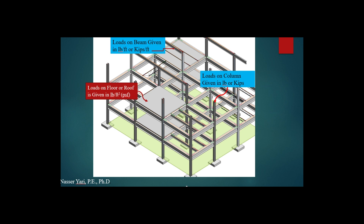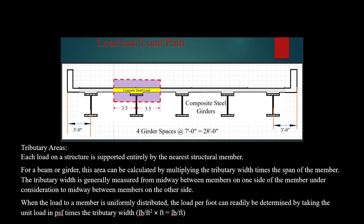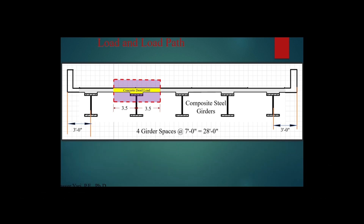Before we calculate these loads, one thing you've got to know ahead of time is tributary area. What is tributary area? It's basically where each load on a structure is supported entirely by the nearest structural member. Take a look at this example: we have this bridge in cross-section with five girders. Girder number two — the tributary width is halfway between this girder and the girder next to it on the right, and halfway to the girder next to it on the left, so the tributary width is about seven feet.